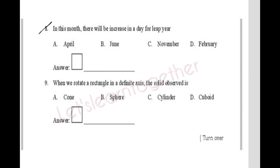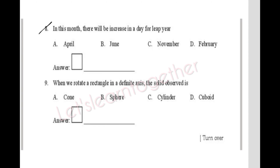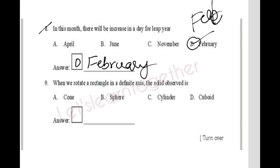Question 8: In which month does a leap year have an extra day? A leap year comes every 4 years. February normally has 28 days, but in a leap year it has 29 days. In 2024 we are having a leap year. The answer is option D: February.